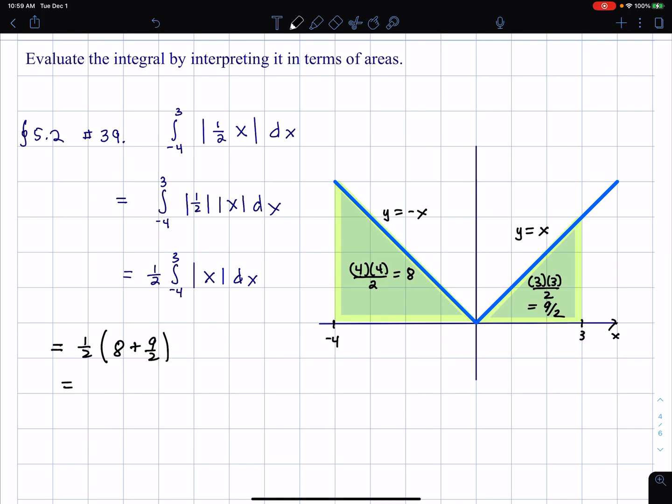Which is the same thing as one half, let me get a common denominator, sixteen halves plus nine halves. So that's one half times 25 halves. So apparently, that's 25 over four.